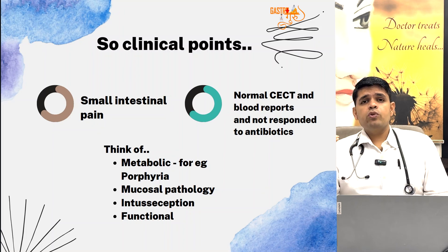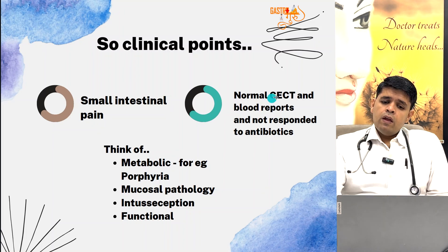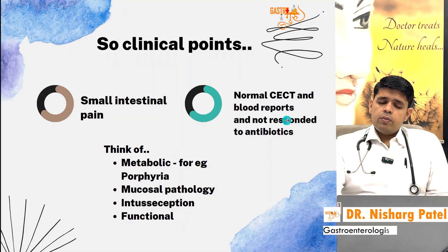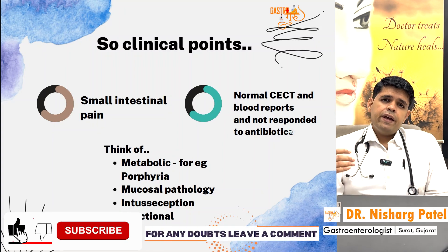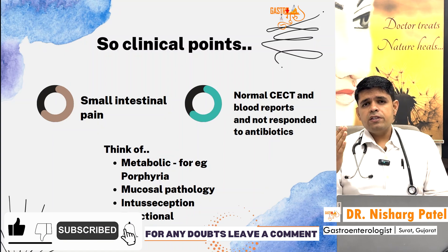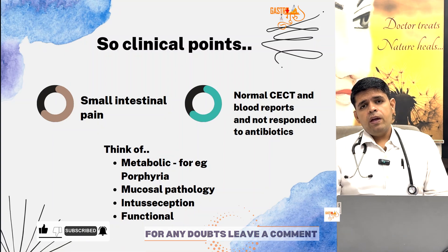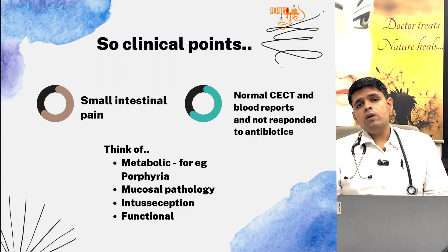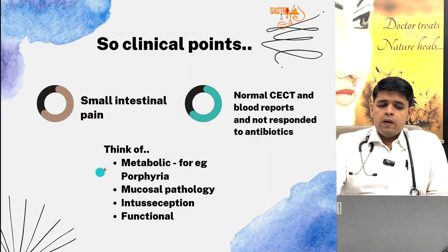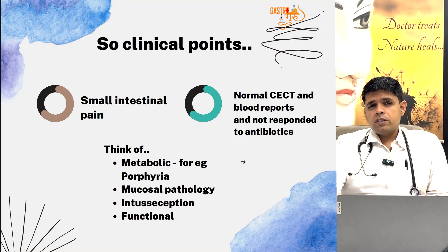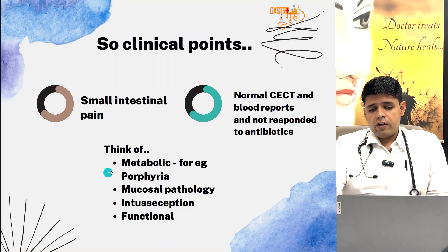Normal CT, normal blood reports, and he had not responded to antibiotics. After 10 days of antibiotics — the initial GP gave him Monocef, then he was switched to Zostrum, that is Cefoperazone Sulbactam with Doxycycline — he was still not getting better. So we think of metabolic reasons. What metabolic cause can cause severe abdominal pain and vomiting? One of them is Porphyria, as I have mentioned.